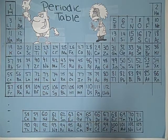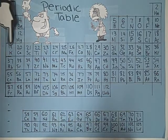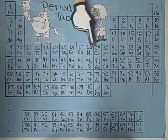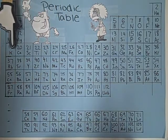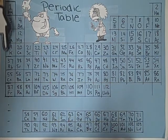The table has periods and groups. Periods are the horizontal rows on the table, and groups are the vertical columns on the table.